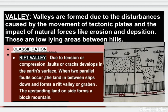Next, we will learn about valleys. Valleys are formed due to the disturbances caused by the movement of tectonic plates and the impact of natural forces like erosion and deposition. They are low-lying areas in between hills. First, rift valleys: due to tension or compression, faults or cracks develop in the earth's surface. When two parallel faults occur, the land in between slips down and forms a rift valley or graben. The upstanding land on the other side forms a block mountain, as shown in the diagram.